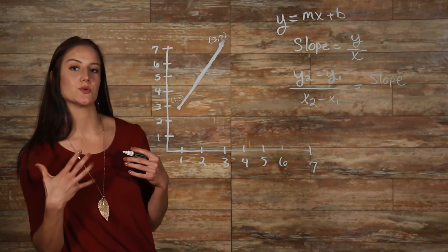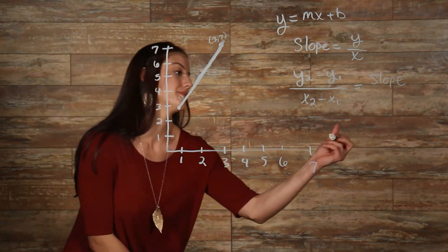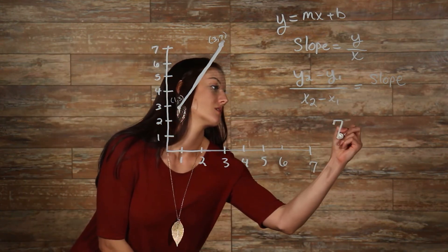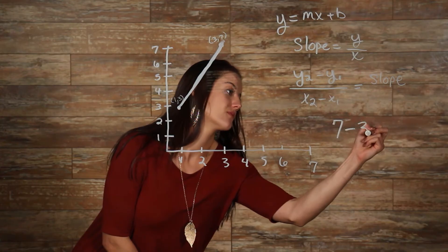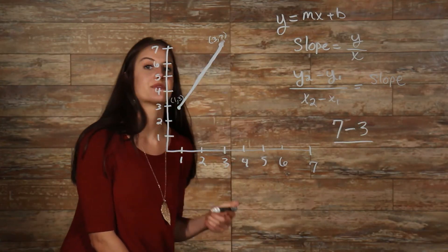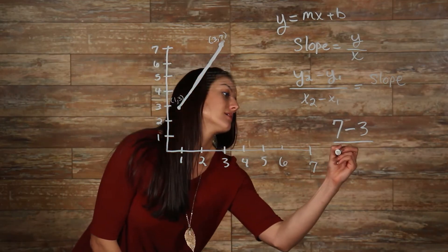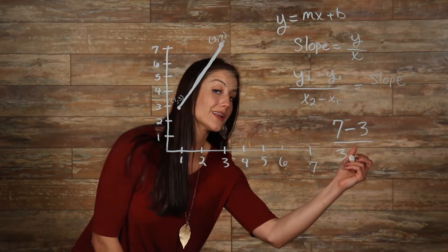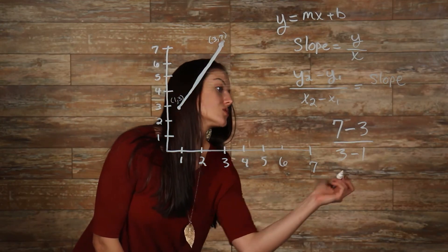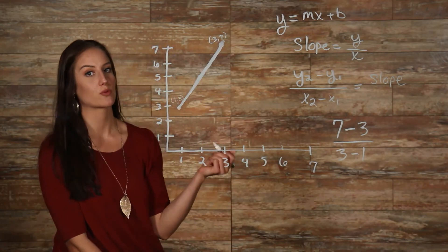Since 7 is our y2, we have 7 minus our y1. And our y1 is equal to 3, over the difference between our x-values, x2, which is 3, minus x1, which is 1. So, we have 7 minus 3 over 3 minus 1.